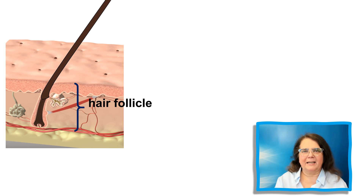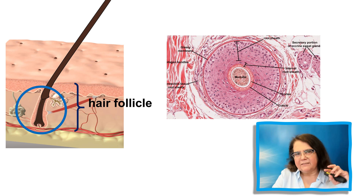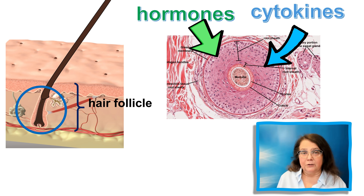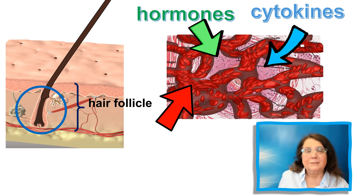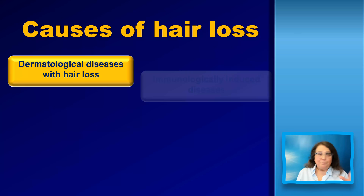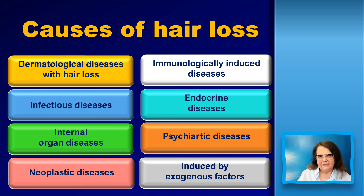This is a hair shaft and a hair follicle. If we have a patient coming in with hair loss, in the great majority of cases this will be a disease of the hair follicle. The hair follicle is a very complex structure surrounded by multiple factors such as hormones, cytokines, and multiple blood vessels. So basically any soluble component of the blood will influence hair growth, and multiple diseases may cause hair loss.